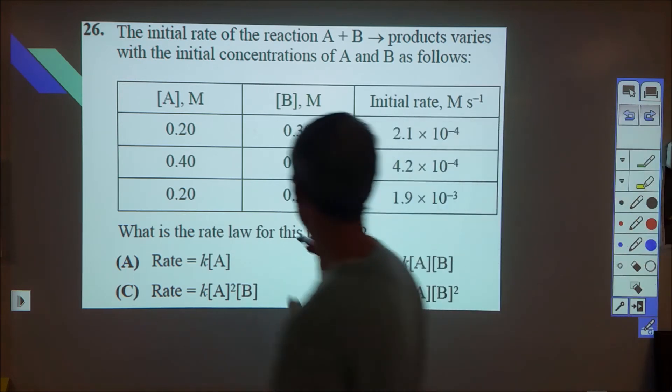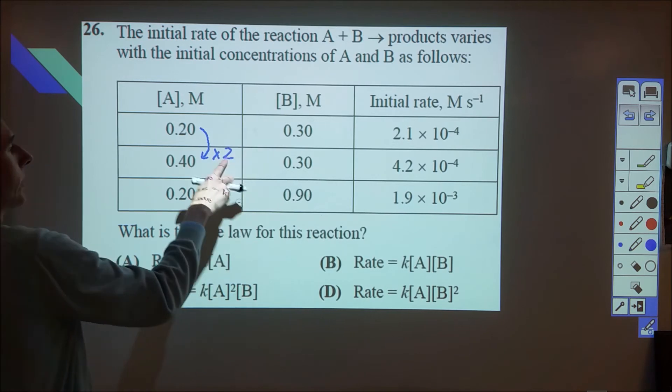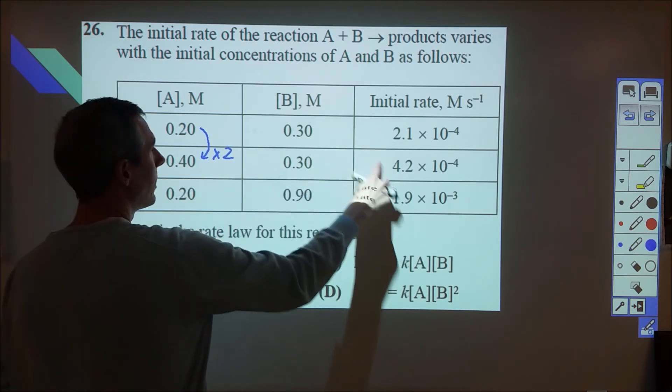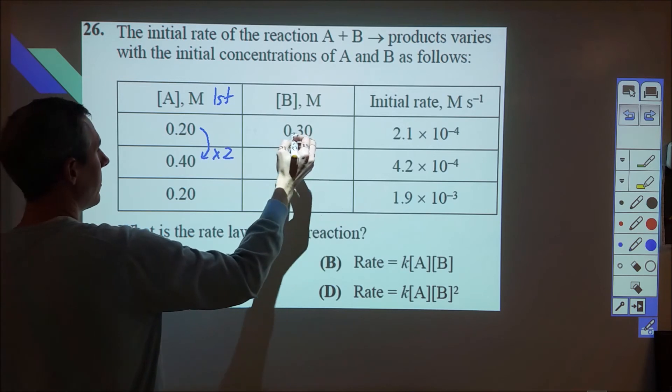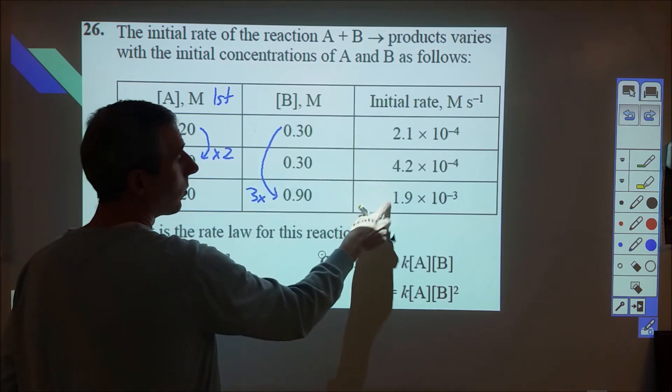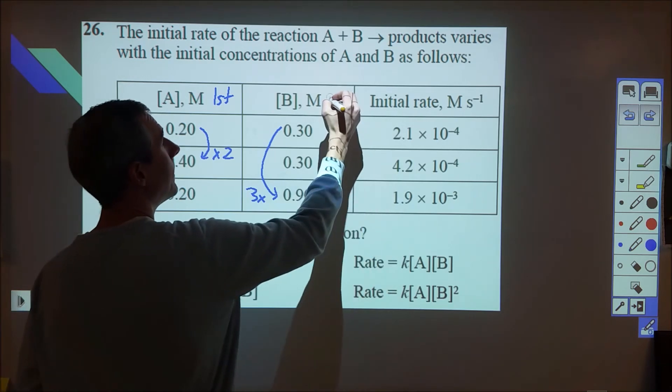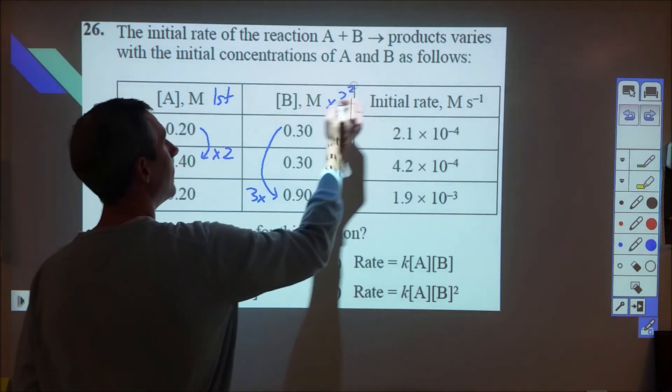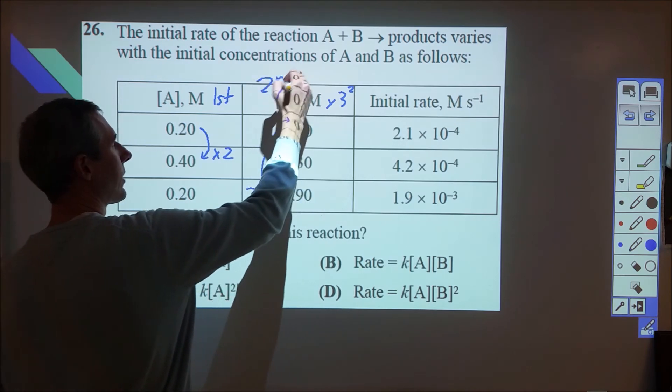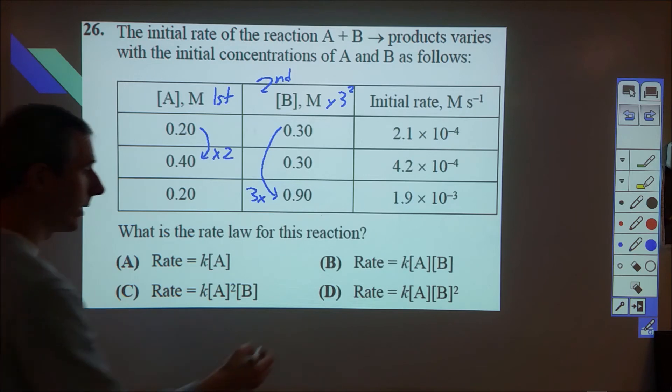And then furthering that along here, here this is a nice and easy rate law. I don't know what the deal is here or why there's no tricks. So we double this and our rate doubles. That tells us that A is first order. And then between experiments one and three, we triple this and our rate triples squared, so it goes up by nine. And so that means that this is second order. So we have A first order, B second order, and that will give us D.